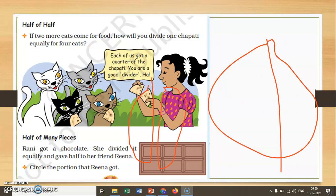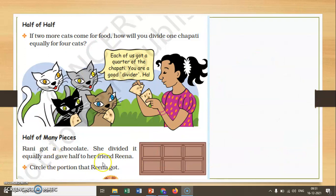So you get one part like that, one piece like this, the third part, and the fourth piece. Like this you get four pieces of one chapati, so all four cats are happy.